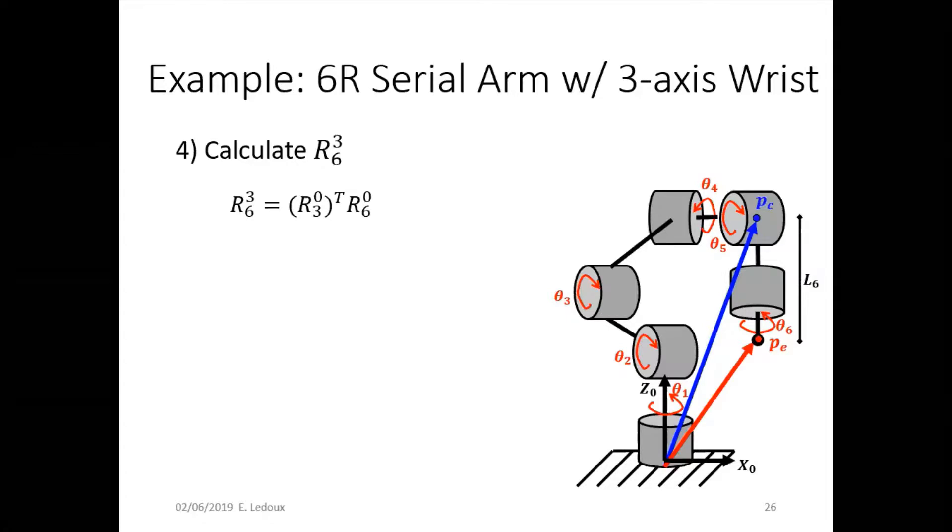Then to get R3,6, we do what is sort of like a division. So we would multiply by the original R6,0, by the inverse of R3,0. But for a rotation matrix, inverse and transpose are the same thing. So it's sort of like you're dividing R6 by R3, except that it's matrices, so you really just multiply by the inverse.